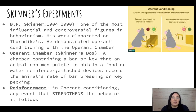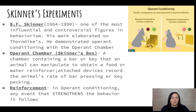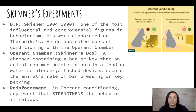B.F. Skinner is one of the most influential but also controversial figures in behaviorism. He really elaborated on the works of Thorndike. Both Thorndike and Skinner, and operant conditioning in general, build on classical conditioning. But they said it's not just about what happens during the learning when the behavior is happening — there's also learning that takes place after the behavior. The consequences of the behavior are also a factor.